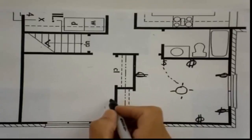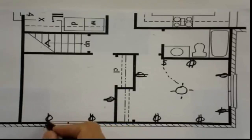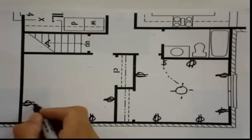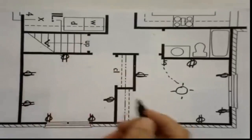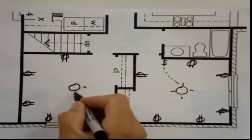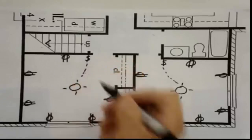Now we're going to hit the other bedroom. Put our outlets, put two, and our light in the middle and our switch right by the door as you're coming in.